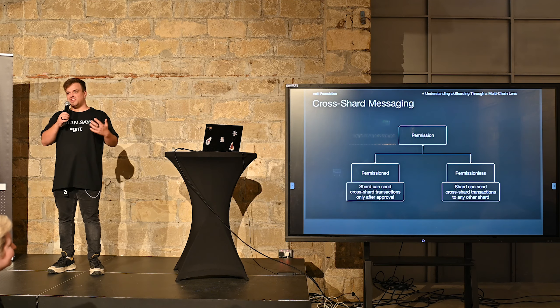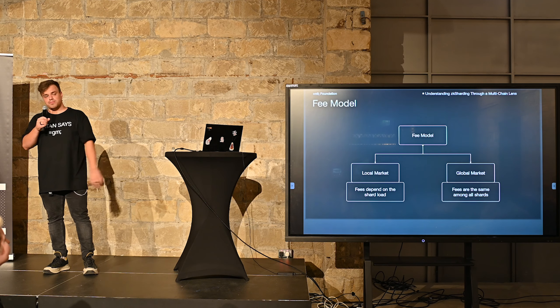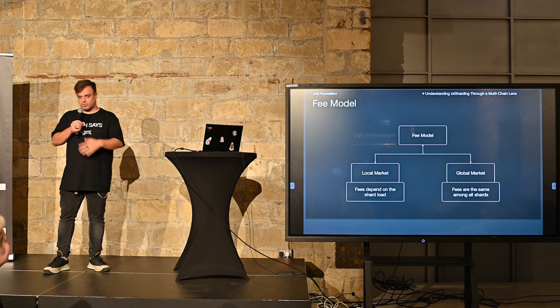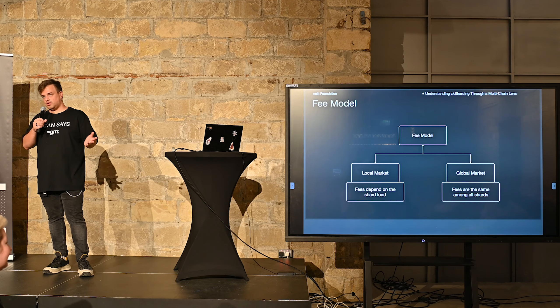First thing — it's a sharded ZK Rollup. So let's define what blockchain sharding is. Basically, blockchain sharding is the partitioning of state as well as computations among different pieces called shards, in a way so you can run calculations and computations in parallel.